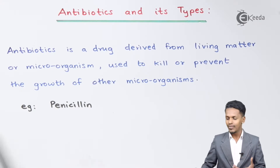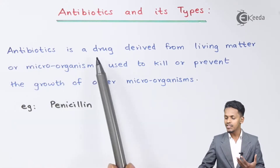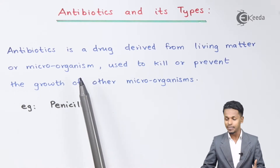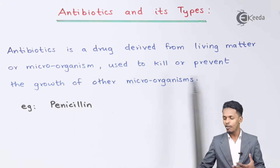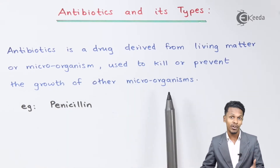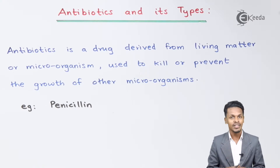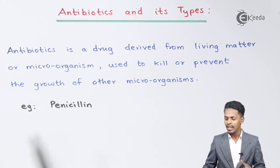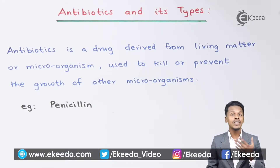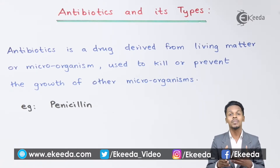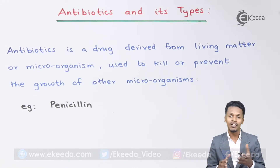Antibiotic is a drug derived from living matter or microorganisms, used to kill or prevent the growth of other microorganisms. Those drugs are basically known as antibiotics. For example, penicillin. Penicillin was the first antibiotic to be successfully derived, and it was discovered by Alexander Fleming.